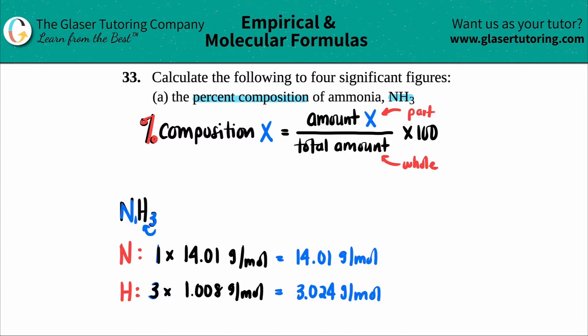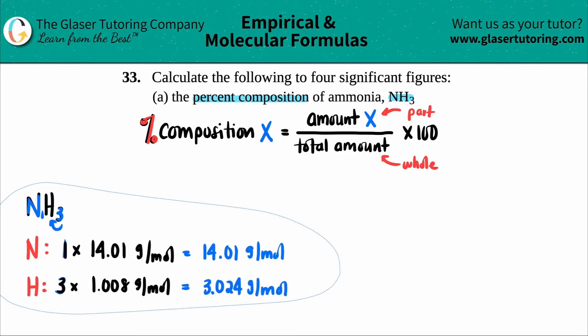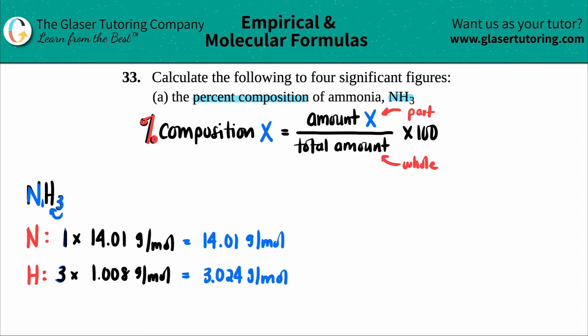Now in order to do this, we have to find out the total amount for the whole entire compound. So I'm going to bring this over on this side, because we're going to add the totals. So I'm going to take my 14.01 and just add it to the 3.024 to get a total molar mass amount.